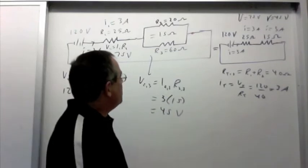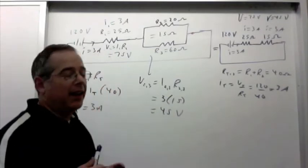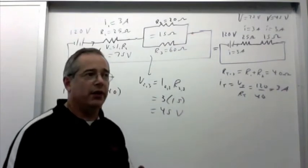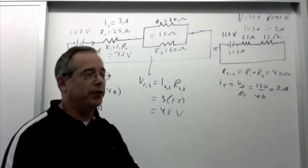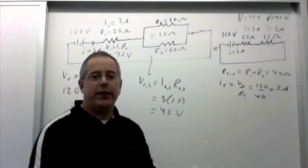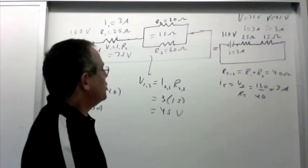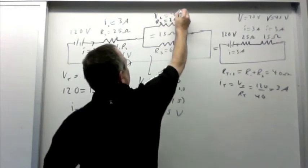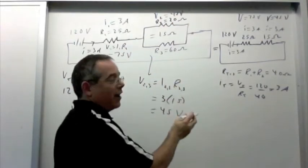And now the trick is, because it's parallel, voltage of all branches is also 45 volts. Our 45 volts. Voltage of all branches. The voltage of each branch is 45 volts. So V2 is 45 volts. V3 is 45 volts.